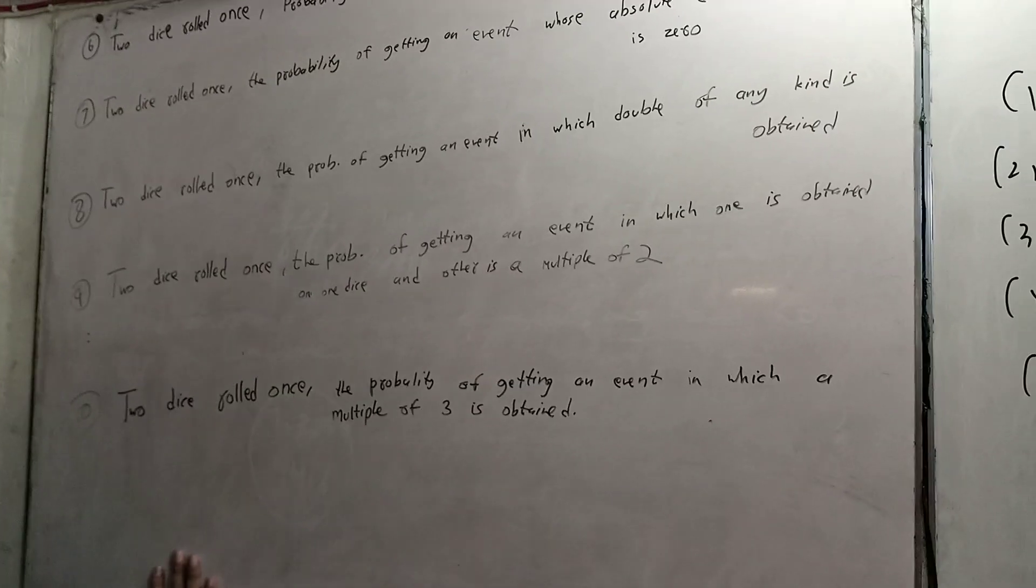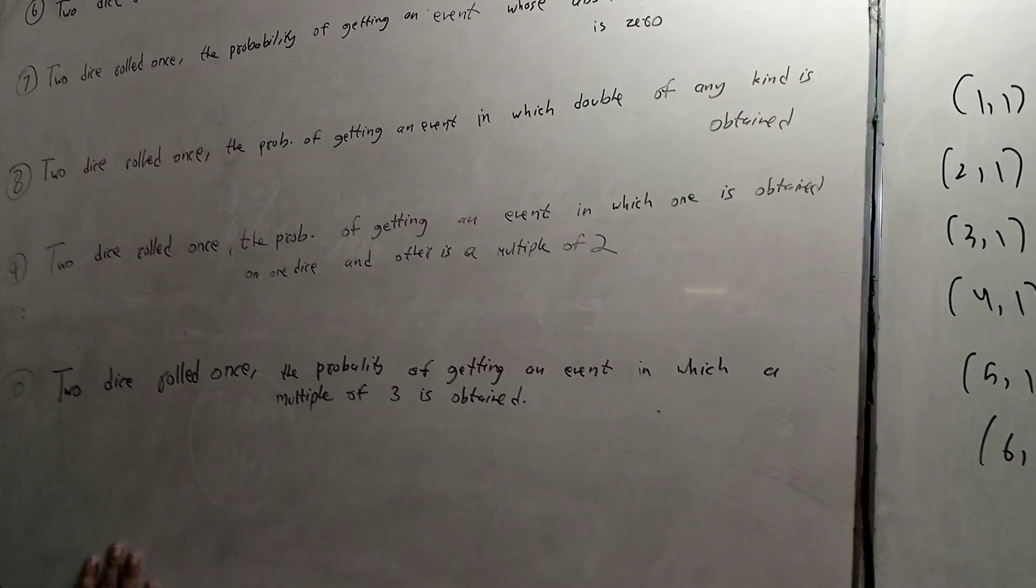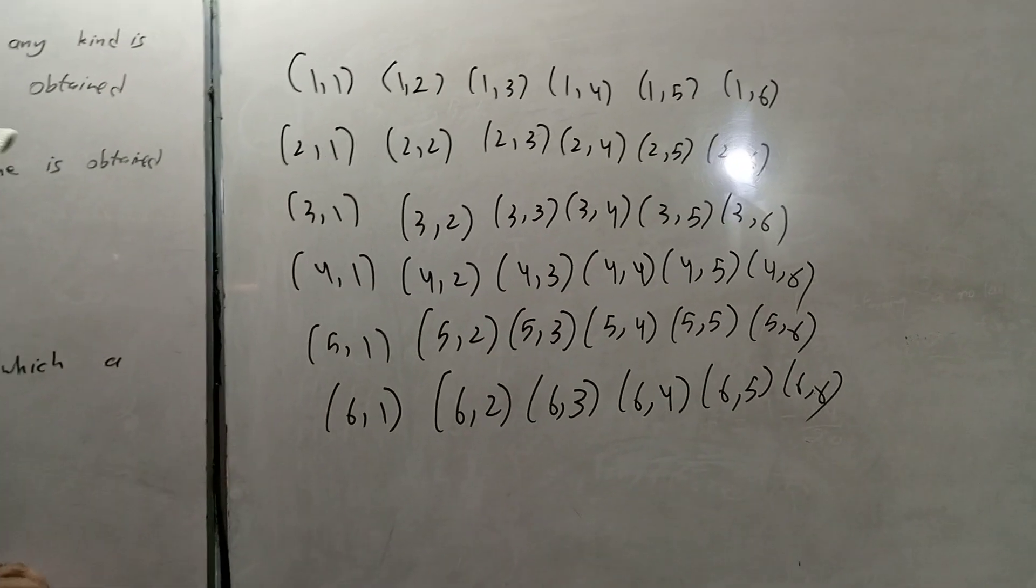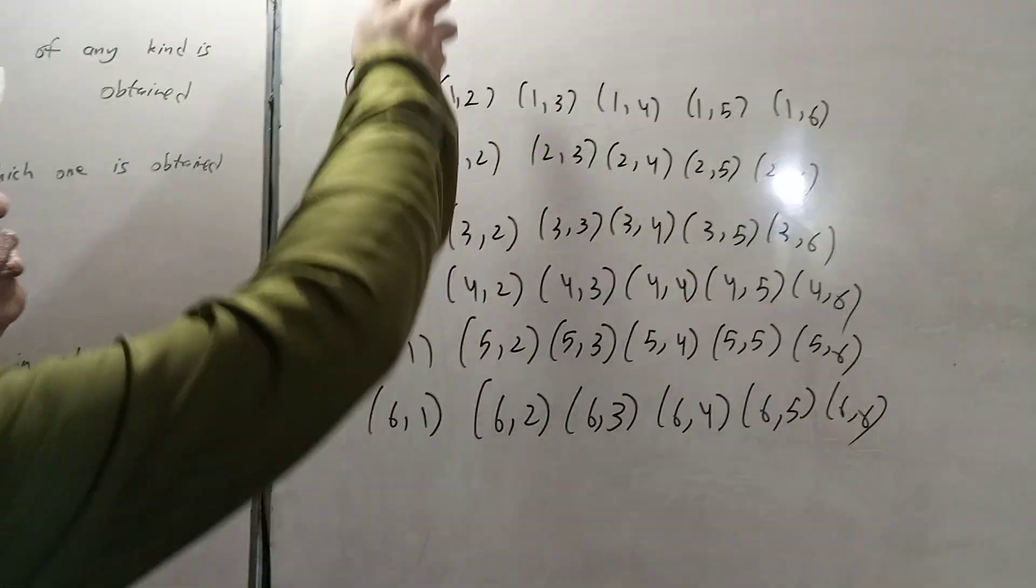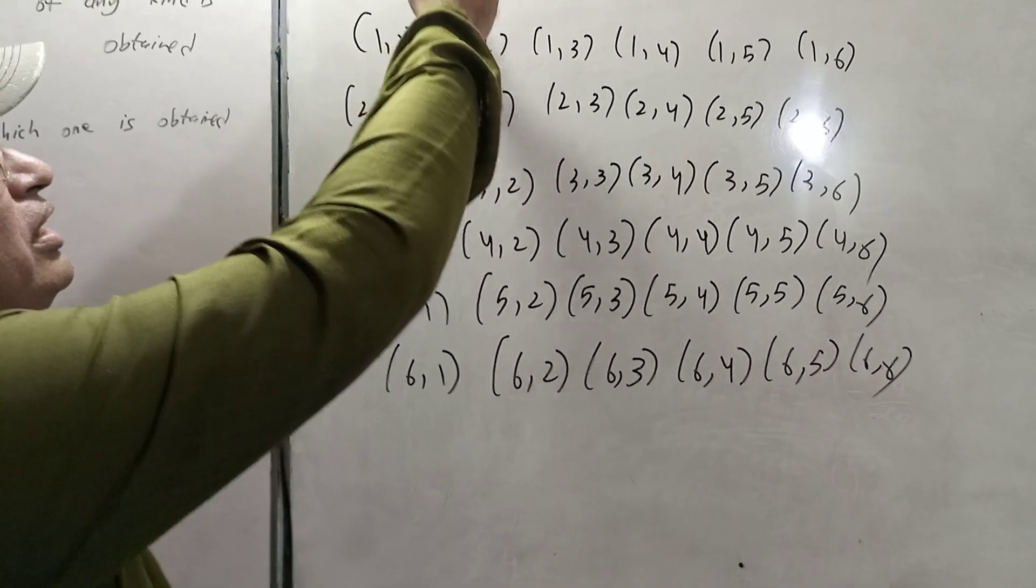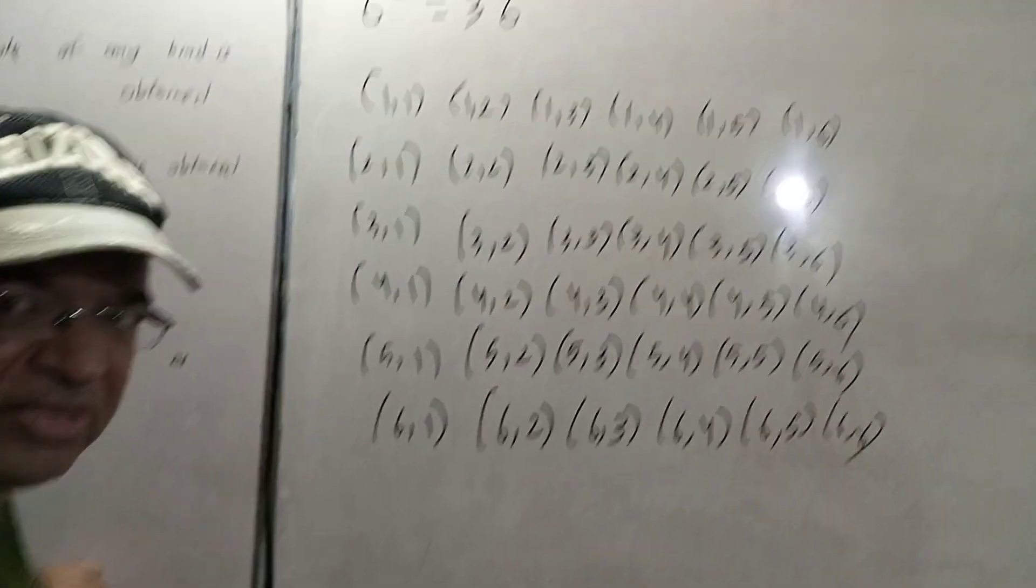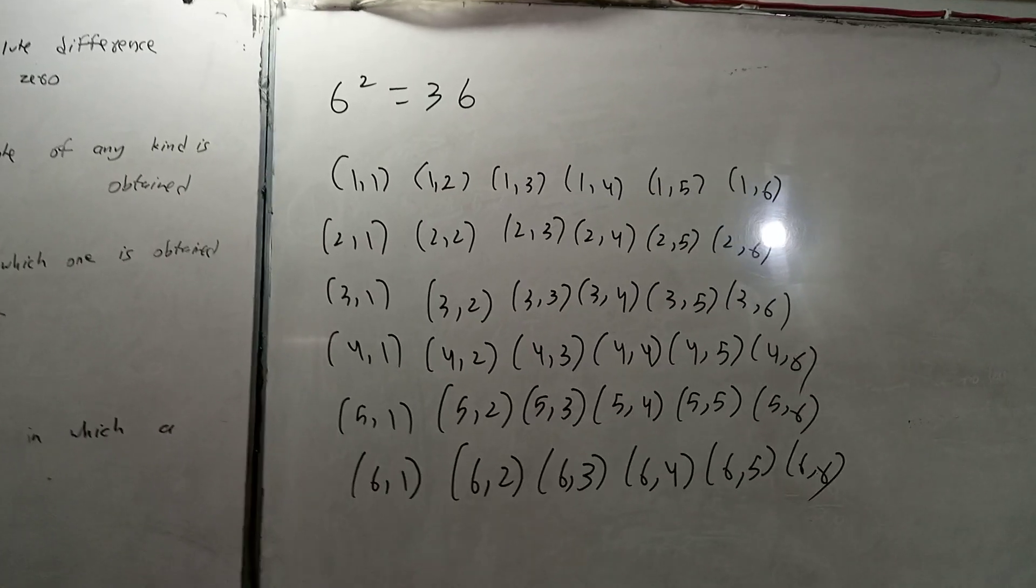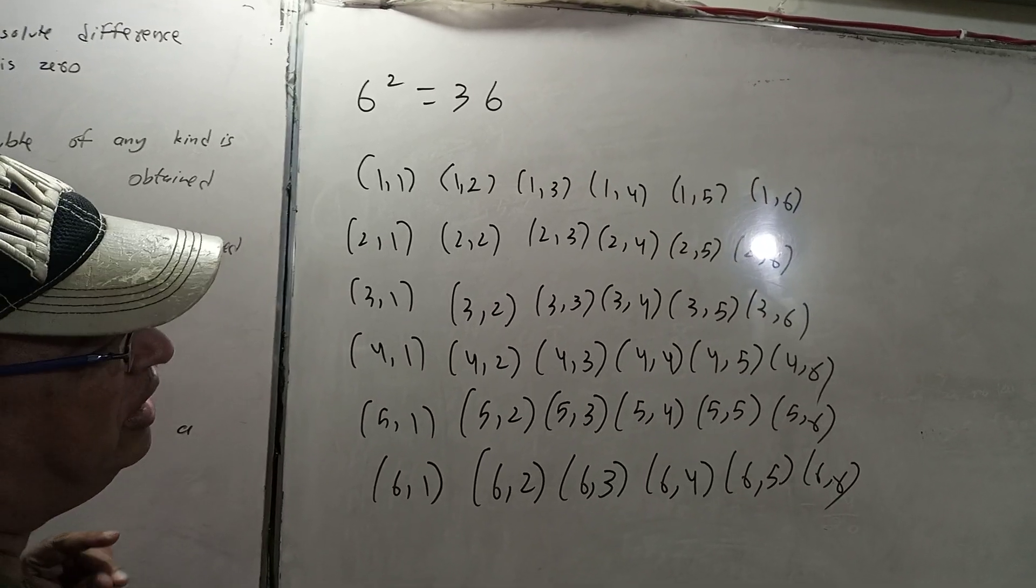Two dice rolls, probability of getting any event in which a multiple of 3 is obtained. This is a good concept. For two dice, we have 6 squared equals 36 total events. Now let's list all 36 events.